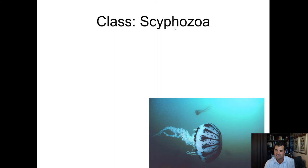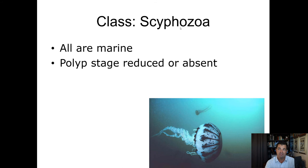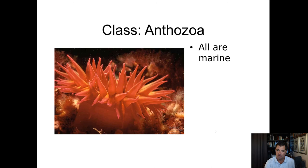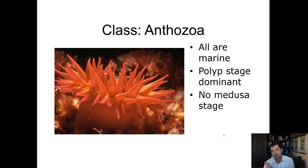The next group is the class Scyphozoa. Scyphozoans are all marine and either have a polyp stage that is reduced or absent altogether. The medusa stage is a free-living form of the scyphozoan — the most common examples you'd know are the sea jellies. The next class is Anthozoa. Anthozoans are all marine and have a dominant polyp stage; in fact, they have no medusa stage at all.